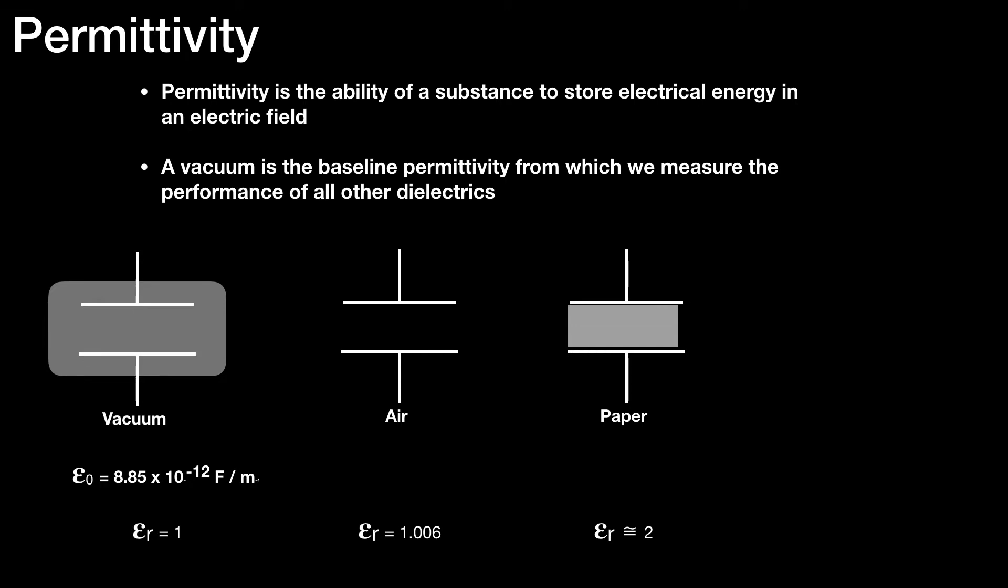Paper has a much better permittivity than air or a vacuum, and the value is approximately 2. So it's twice as good at storing electrical energy in an electric field as air or a vacuum. And mica is five times as good.